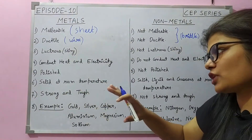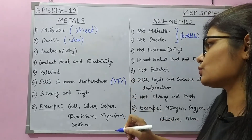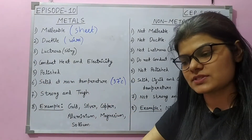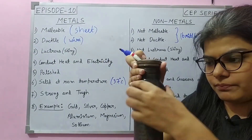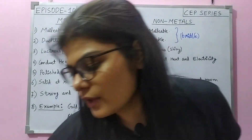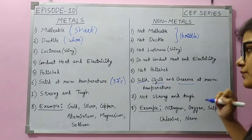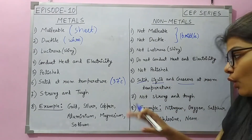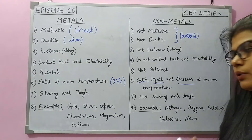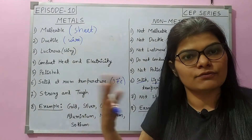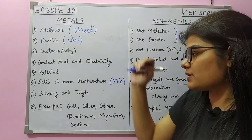Metals are always solid at room temperature — around 37 degrees Celsius. Like this bottle, it is solid and will not convert to liquid or gas. Non-metals can be solid, liquid, or gaseous. For example, iodine is a non-metal and it is solid at room temperature. Bromine is liquid at room temperature. And gases include oxygen, nitrogen, sulfur, hydrogen — all these are gaseous non-metals.